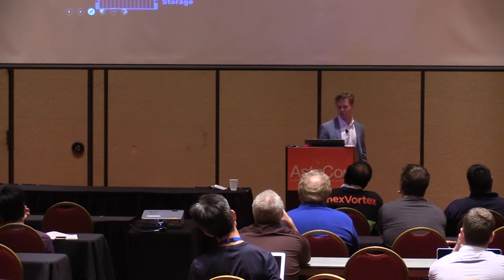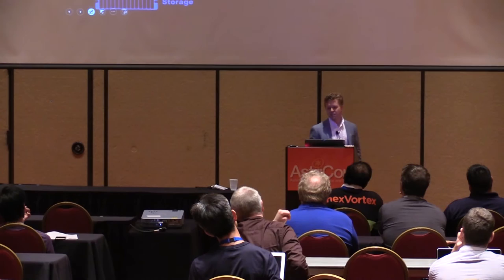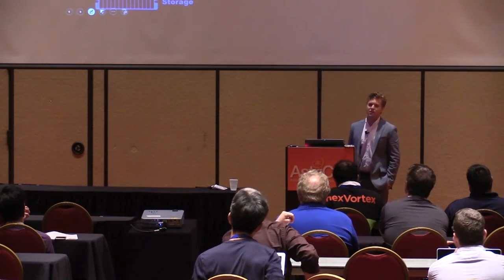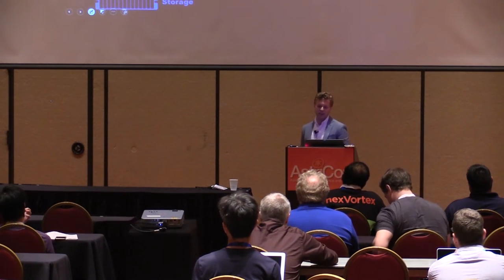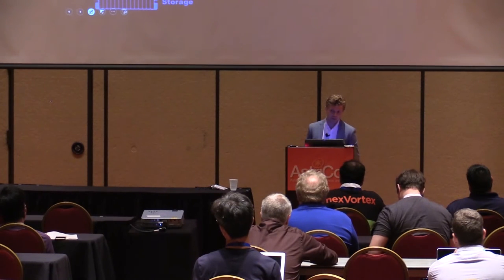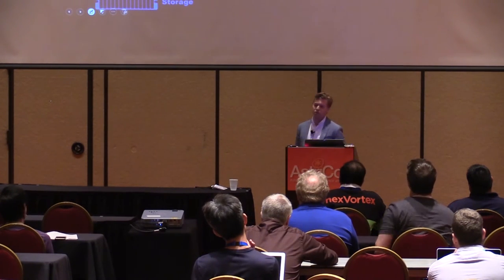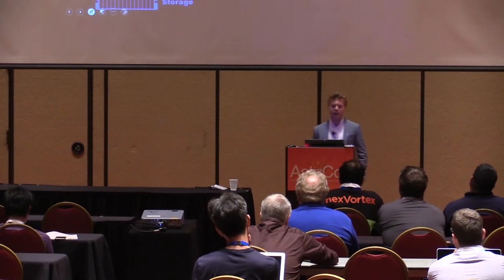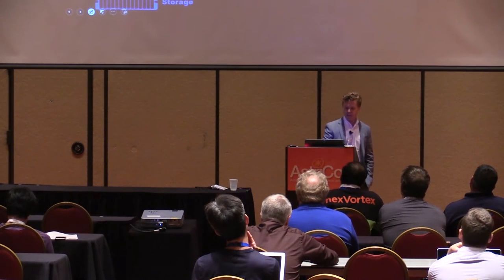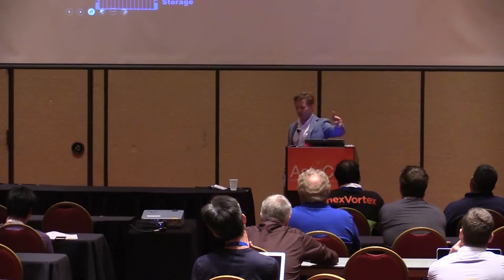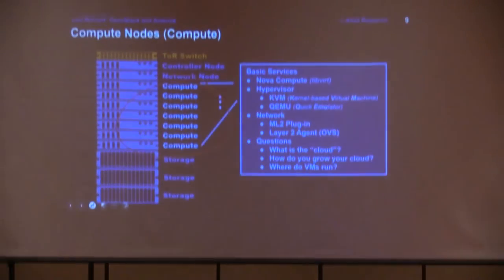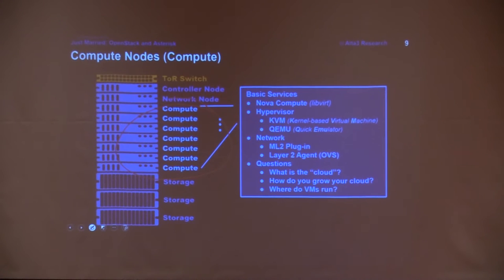OpenStack sends orders to the hypervisors to do things, but the hypervisors at the end of the day are what create the virtual machines and virtual infrastructure. The cloud is compute — it's as many compute nodes and hardware resources running hypervisors as you have. To grow your cloud, just add more compute and tell Nova. These compute nodes could actually be the exact same hardware as the controller or network node — what's installed on it differentiates it.